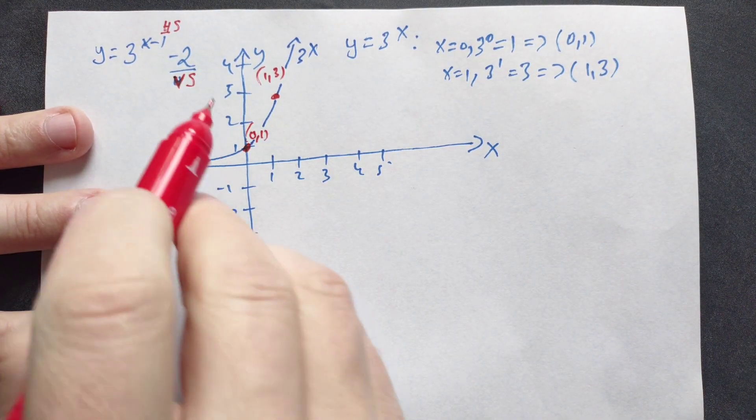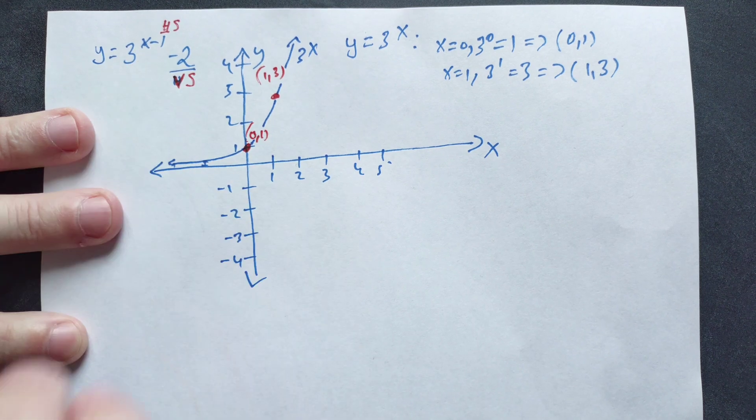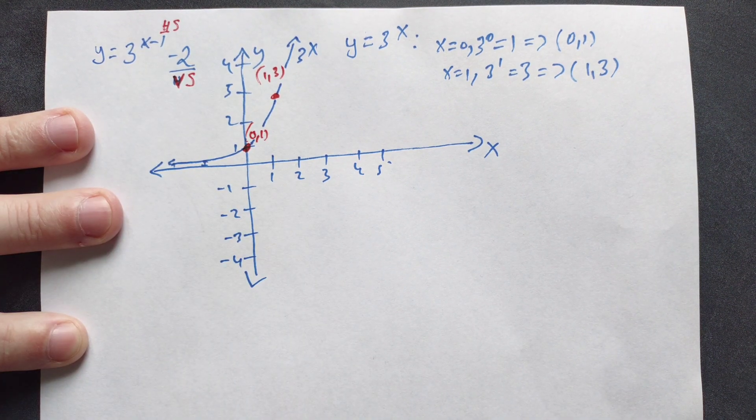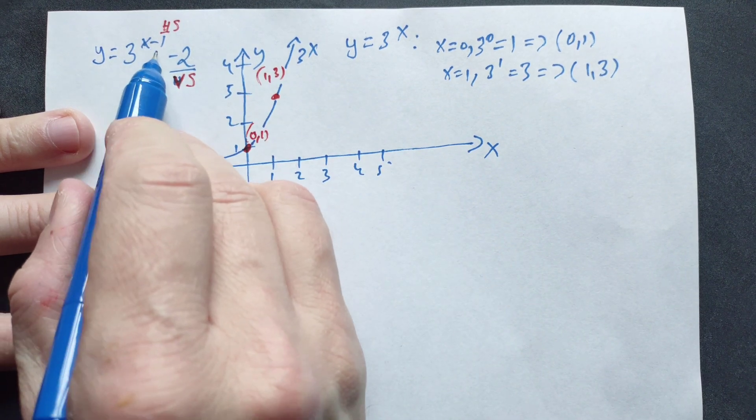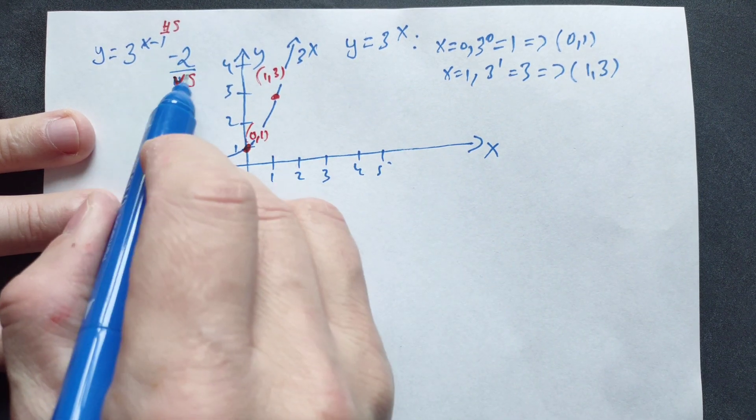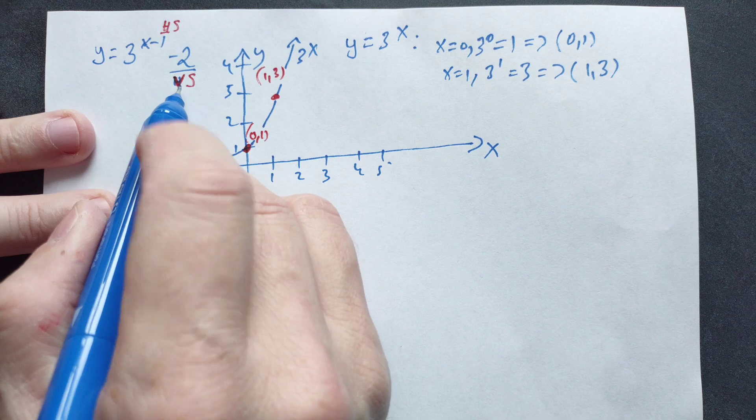Our graph, though, is this one: 3 to the x minus 1 minus 2. So we can use these points as follows. Just transform them. And this says, the 1 there says add 1 to the x, and the negative 2 means subtract 2 from the y.